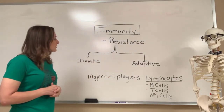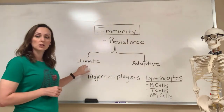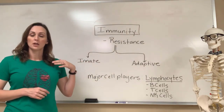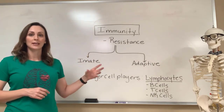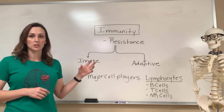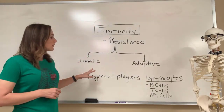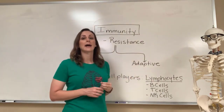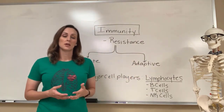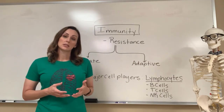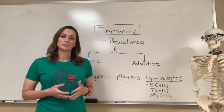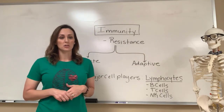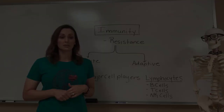We've got two kinds of immunity. We have innate, which is also known as non-specific, so it's going to react the same way to any pathogen. And then we've got adaptive, which is specific, and it is going to act specifically towards infectious agents that it's been exposed to. This is going to develop after we're exposed to certain environmental hazards.